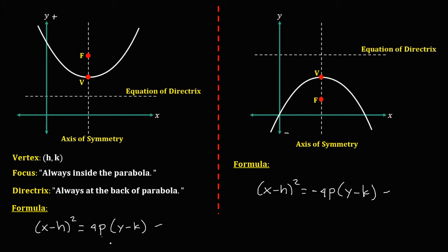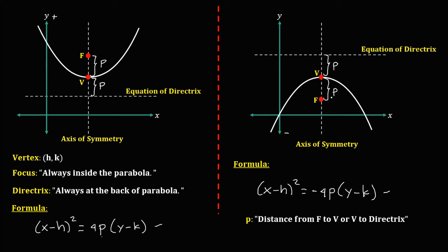To solve for p: p is the distance from the focus to the vertex, or from the vertex to the directrix. So from the focus to the vertex is p, and from the vertex to the directrix is also p. Therefore, the distance from the focus to the vertex equals the distance from the vertex to the directrix.